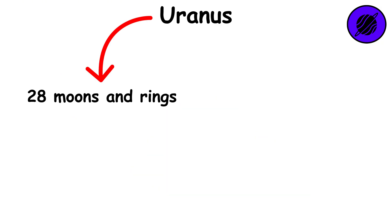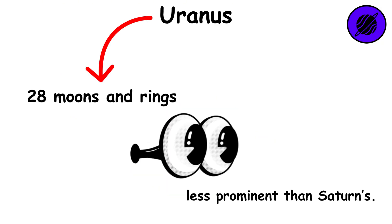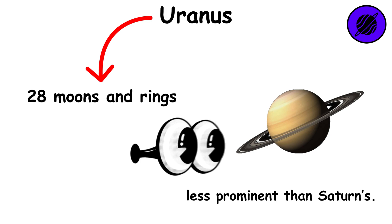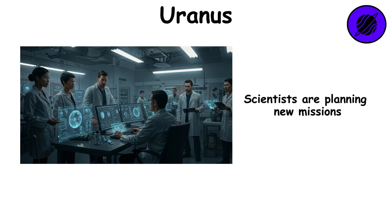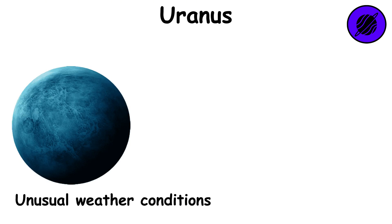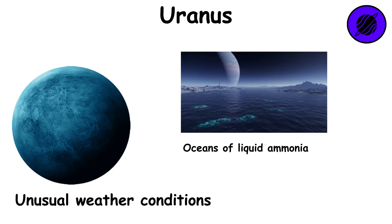Uranus has 28 moons and rings, although they are less prominent than Saturn's. The only spacecraft to visit it was Voyager 2 in 1986. Scientists are planning new missions to uncover more of the mysteries of this enigmatic planet. Uranus may have unusual weather conditions and oceans of liquid ammonia, which remain little understood.